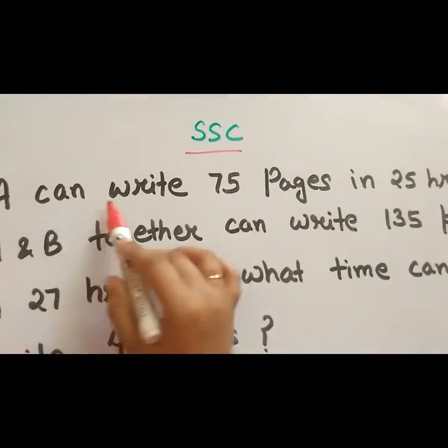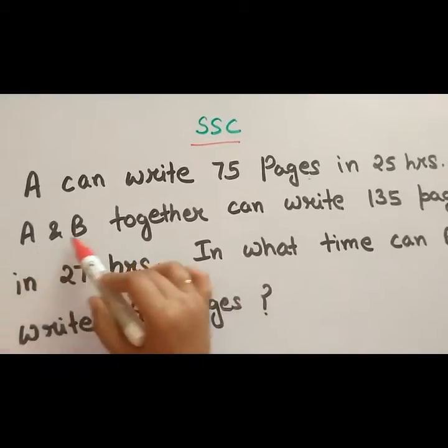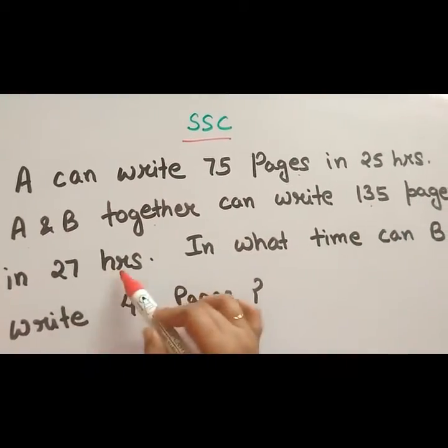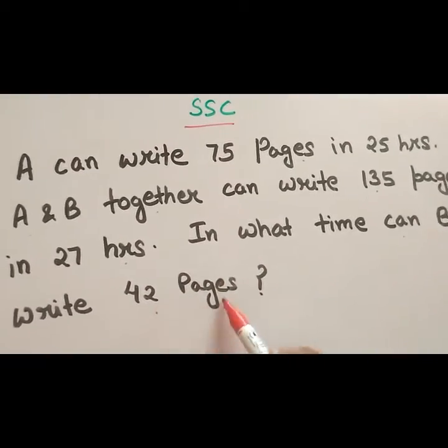SSC question: A can write 75 pages in 25 hours. A and B together can write 135 pages in 27 hours. In what time can B write 42 pages?